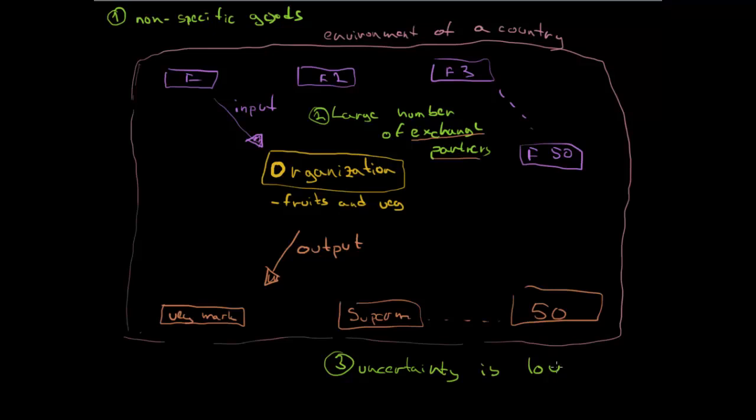Which can include, for instance, that the political situation is very fine, the economy is growing with a stable pace, so we can really rely on these facts, and the uncertainty that is surrounding us is very low. So these were the three points, or this was the ideal market for our transaction cost theory.